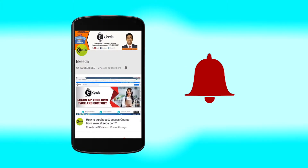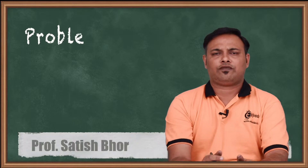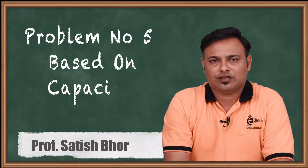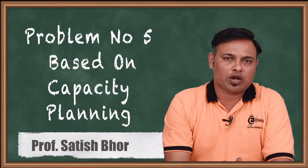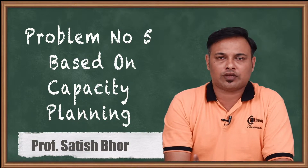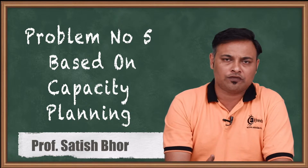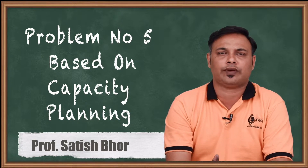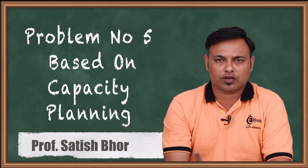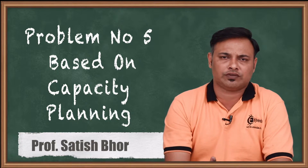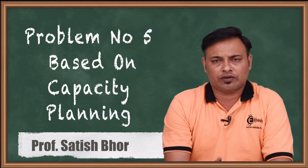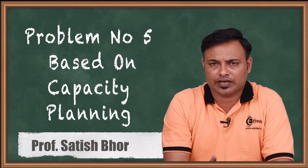Hello friends. These are the main problems based on capacity planning. What we did earlier was all based on forecasting — the first four problems were based on forecasting, which included the method of least squares and regression.